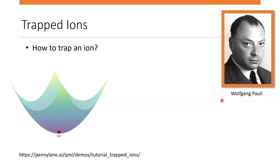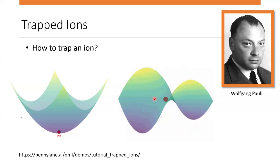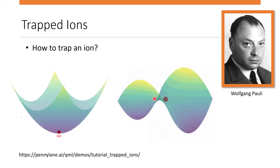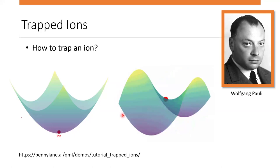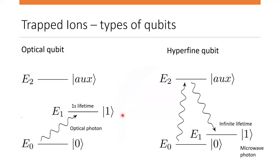Now I'd like to move on to trapped ions. As the name suggests, this technology relies on ions confined in a specific space, manipulated with lasers to perform calculations. The key question is how to force ions to remain in a specific place. The answer is to use an electric field to create a potential where electrically charged ions will sit still. However, obtaining a static confining field is impossible due to the laws of physics, so instead one creates a saddle potential which rotates — and the ion will not escape from such a field.